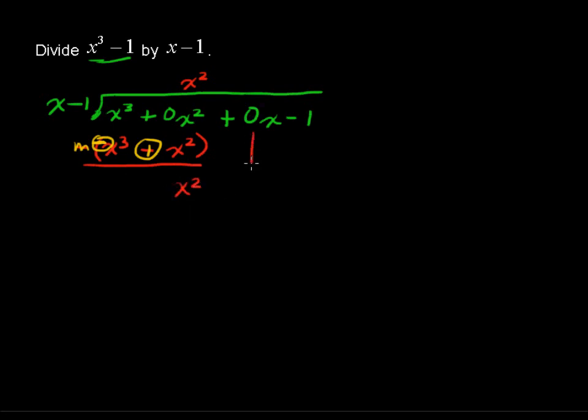Drop down the next term, just like the next digit if you're doing long division with numbers. So x squared plus 0x. Now, what do we have to multiply by x to get x squared? Well, that is x.